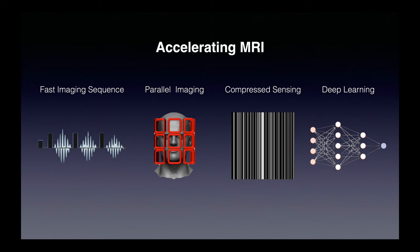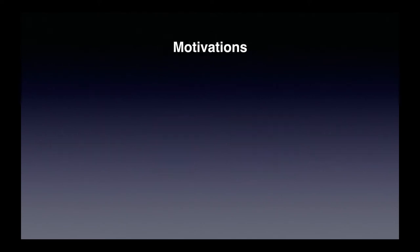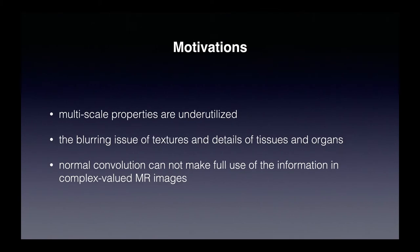Recently, many deep learning MRI methods have been proposed. However, there are still some unresolved issues. First of all, multi-scale properties are underutilized, due to the varying textures and details of tissues and organs. Normal convolution cannot make full use of the information in complex-valued MRI images.